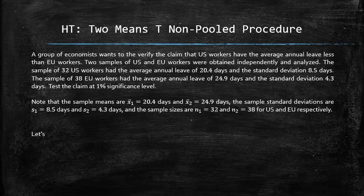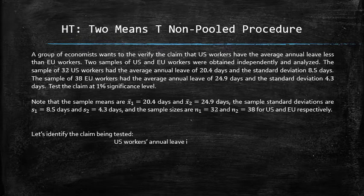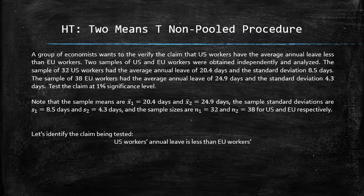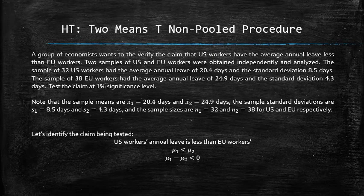Now let's identify the statistical claim that needs to be tested. The claim is that United States workers have less annual leave than European Union workers. We can symbolically express the claim as mu1 is less than mu2, or equivalently as mu1 minus mu2 is less than zero.